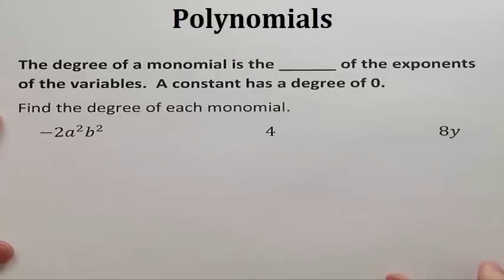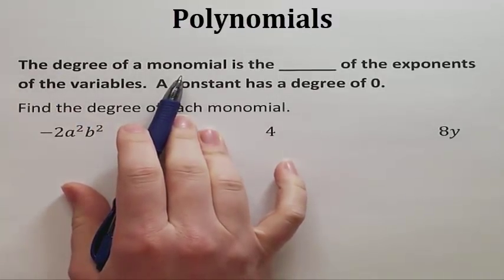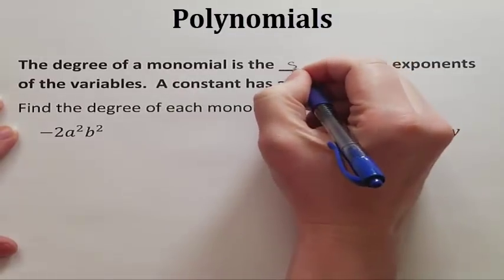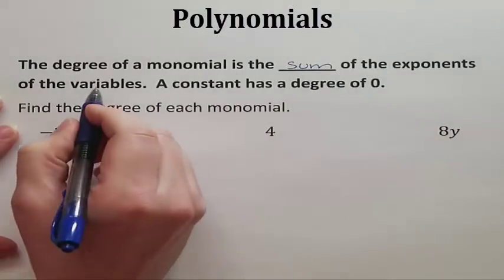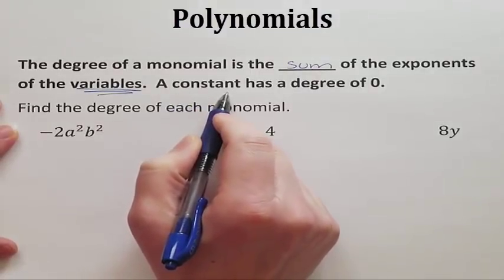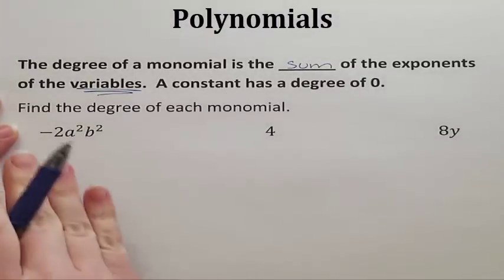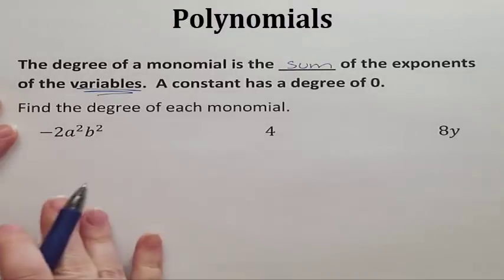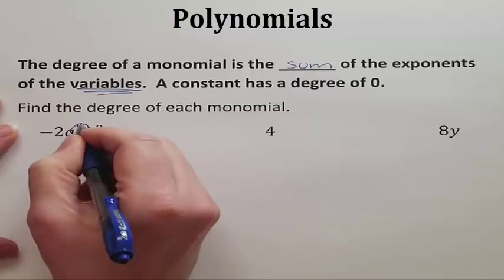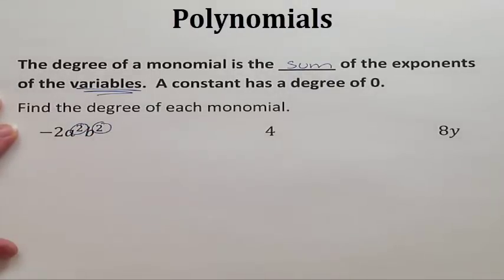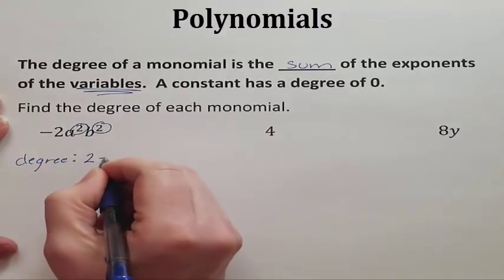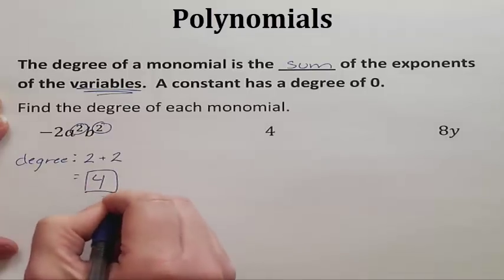It is important that we know what a monomial is because now we have to find the degree of a monomial. To figure out the degree of a monomial, you find the sum — meaning you add the exponents of just the variables. If it is a constant, just a plain number, the degree is 0. So looking at our first monomial, it has a variable a with exponent 2 and variable b with exponent 2. Adding 2 plus 2, the degree of this monomial is 4.